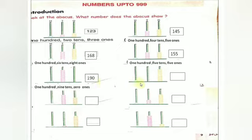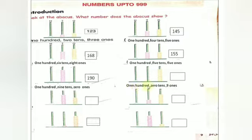Ok children, come to the next one. In the 100's place, 1 bead — so 100. In the 10's place, no beads — so 0 tens. In the 1's place, 9 beads — so 9 ones. 100, 0 tens, 9 ones — 1, 0, 9. What is the number? 109. Understood, children — Abacus.